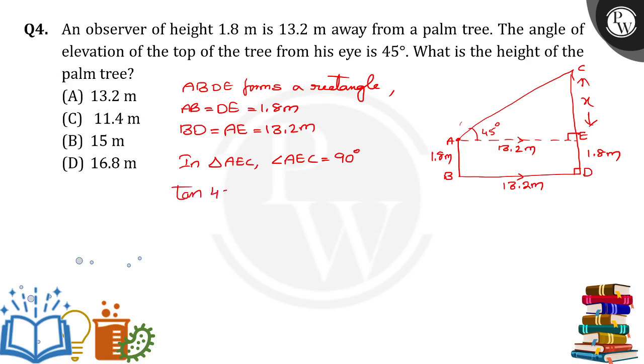Then tan if you apply, tan 45 is equal to opposite by adjacent side. Opposite is nothing but CE. CE by adjacent is AE. Tan 45 is 1. 1 is equal to X by 13.2. Then it implies X is equal to 13.2 meter. This is the value of X.